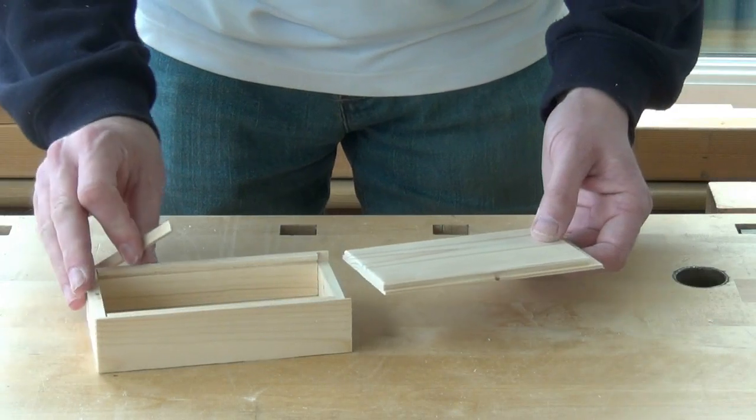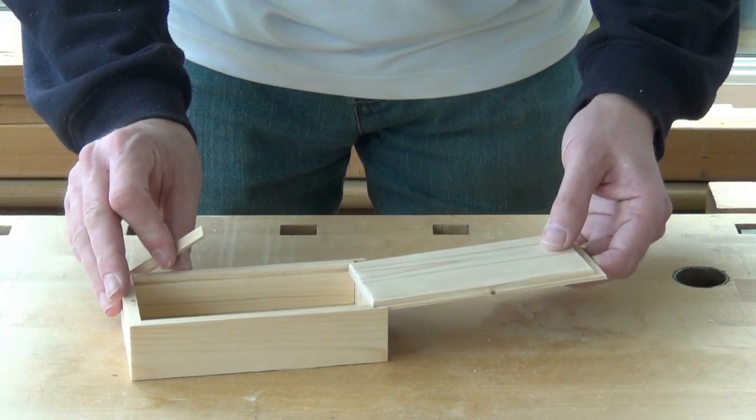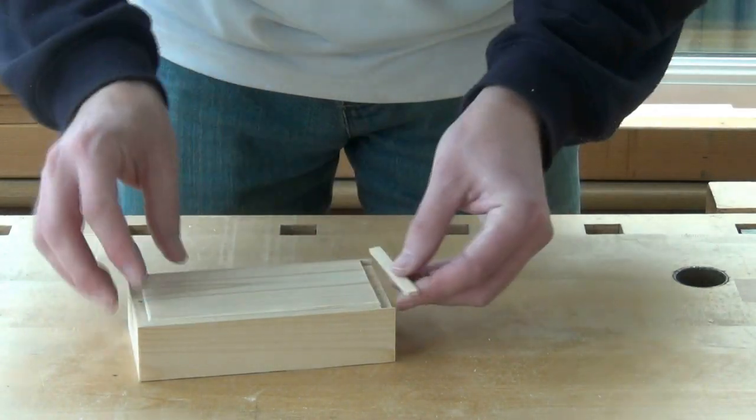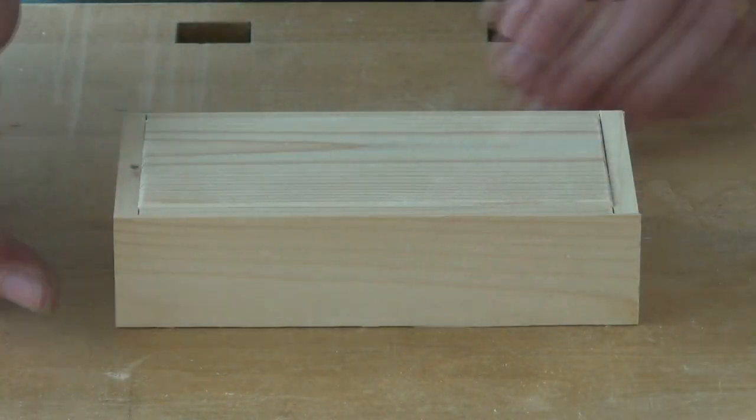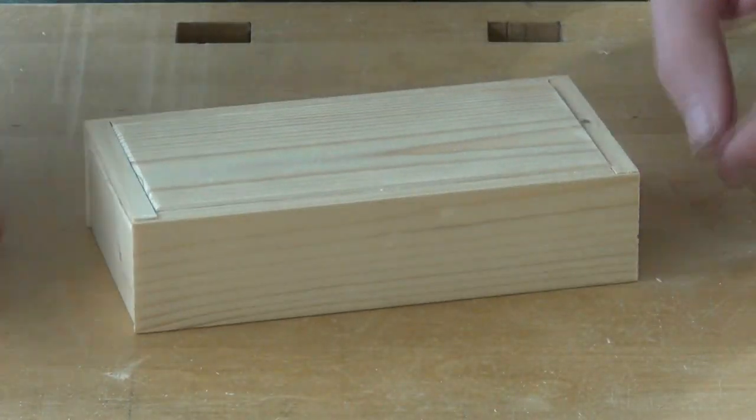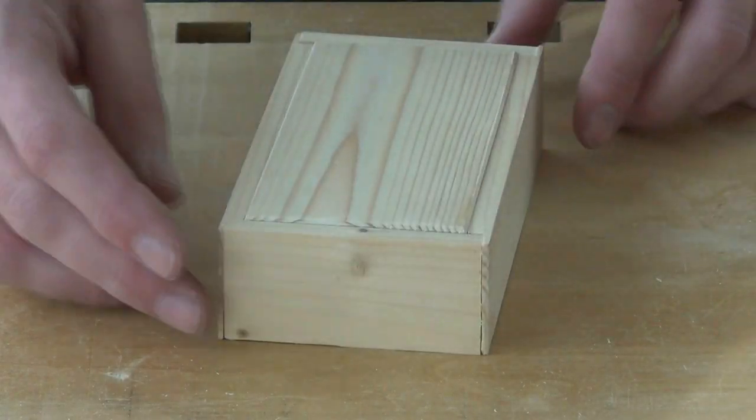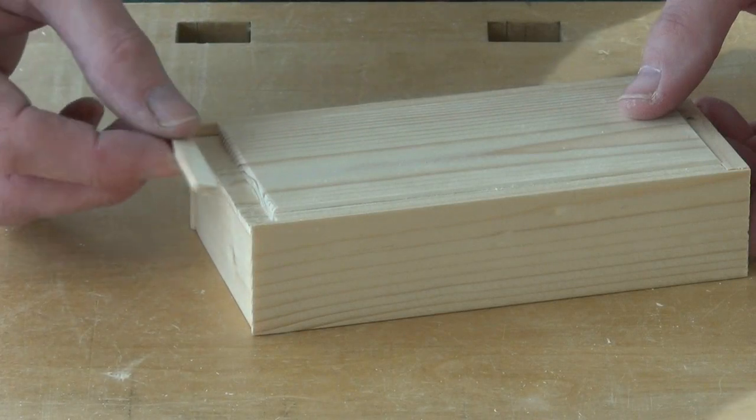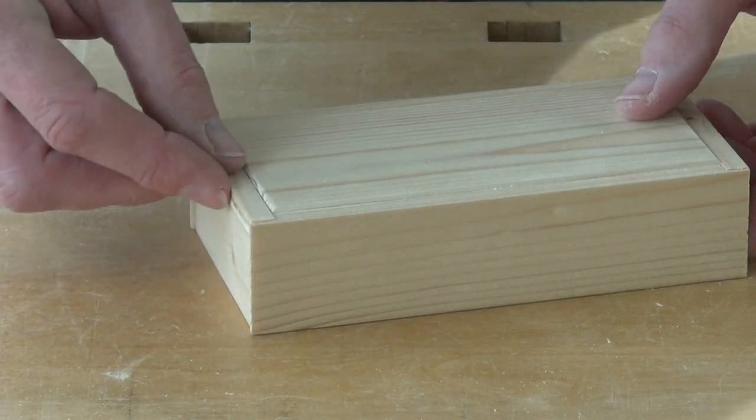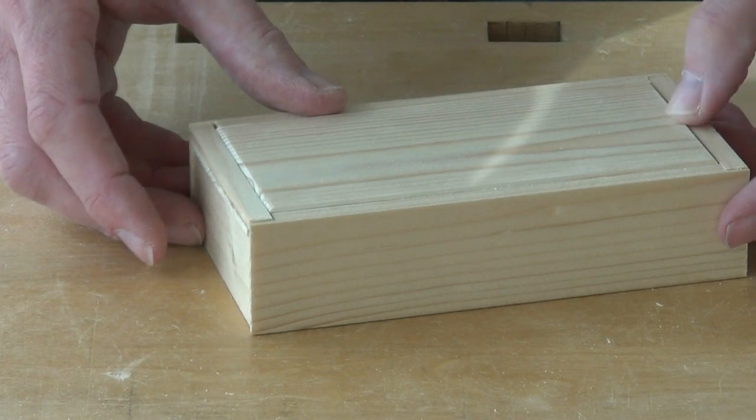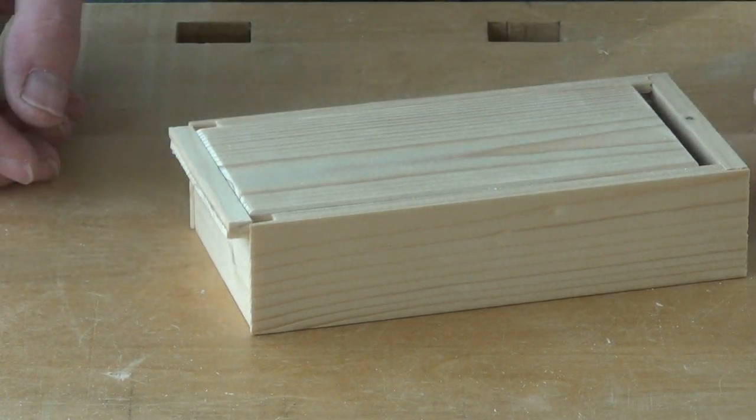So let's put it back together for a final check before we glue it up. I think that's looking quite nice. First of all we need to glue this section on. If we glue it in whilst the lid is in place, I can slide it out to dry and glue up the rest of the box.